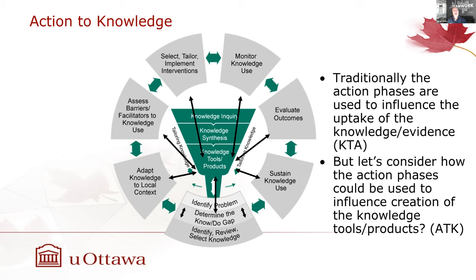Last time we turned the framework on its end — instead of starting with existing knowledge products and asking how to get people to use them, we considered how to think about the knowledge to action phases when we're actually producing those knowledge products and tools. So kind of tipping it on its back, and for each phase, what are the implications when developing our dissemination tools and products?